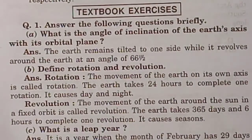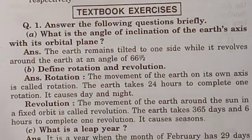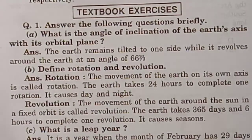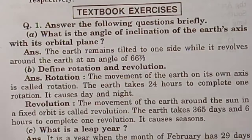Revolution — the movement of the Earth around the sun in a fixed orbit is called revolution. The Earth takes 365 days and 6 hours to complete one revolution. It causes seasons.